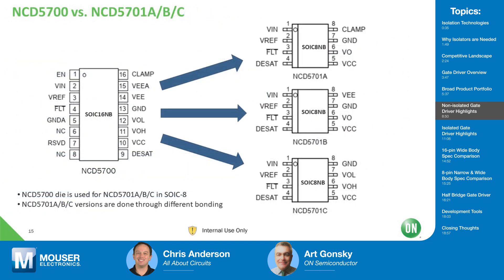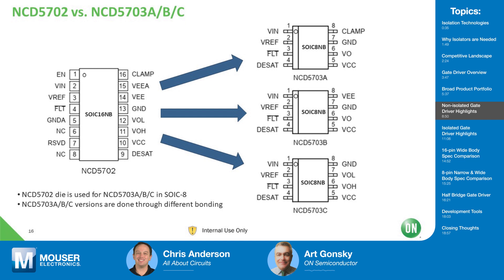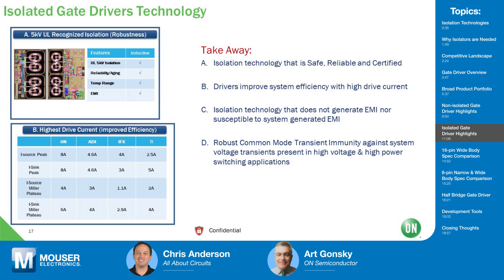The NCD5700 versus NCD5701 A, B, and C: the NCD5700 die is used for all three NCD5701 versions, but the A, B, and C variants use different bonding to remove pins that some customers don't require. This gives a reduced price with reduced features, but still a very effective part with the necessary protection for FETs and IGBTs. Similarly, the NCD5702 versus NCD5703 A, B, and C follow the same approach for customers that don't need every feature of the SOIC-16 package.